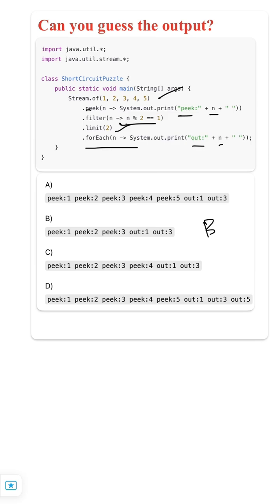So the answer is B, because here the execution flow will be peak method first, then filter, then limit, then for each.